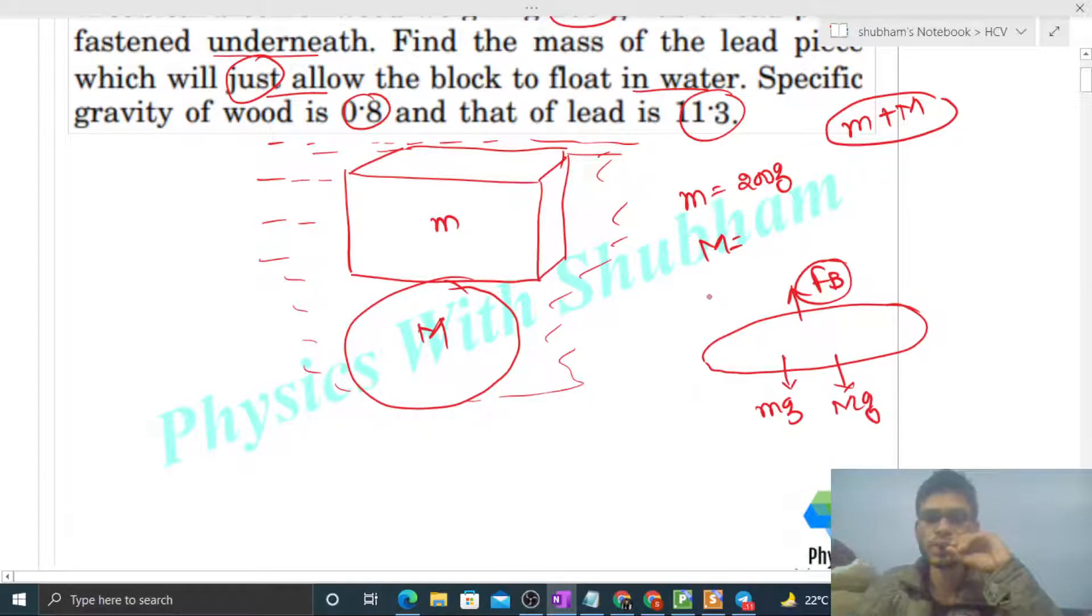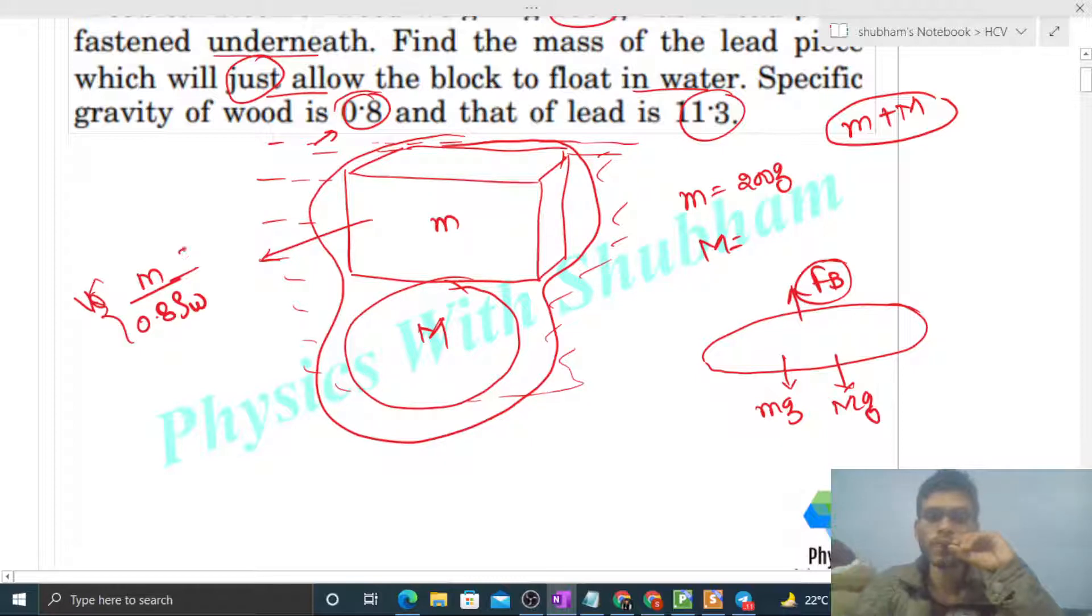Now buoyance force kaise find out karenge? Kitna volume immersed hai inside water? Aap dekho ye jo wooden cube hai iska kitna volume immersed hai water ke andar, that is the total volume of this cube. So total volume of the cube will be simply mass upon density of the cube, means density of this wood. Because it is made up of wood, so wood ka density hoga 0.8 into density of water because iska specific gravity apko 0.8 de rakha hai.